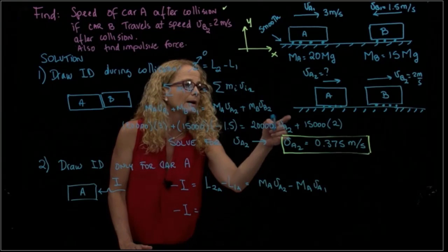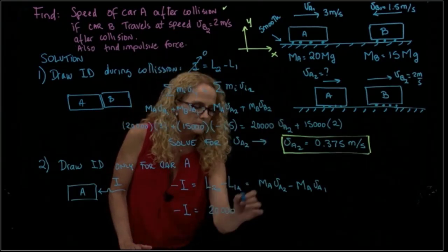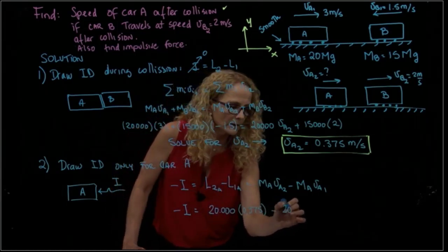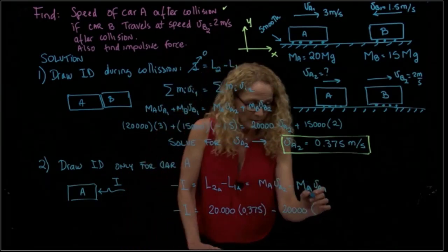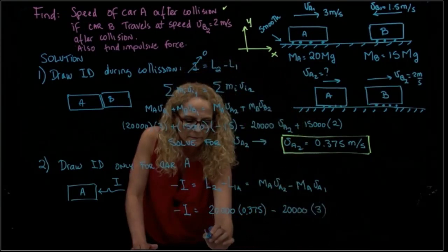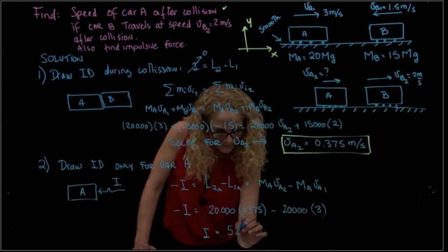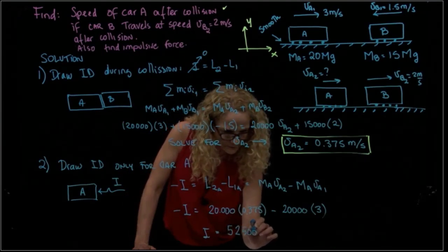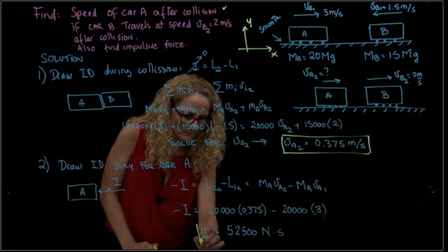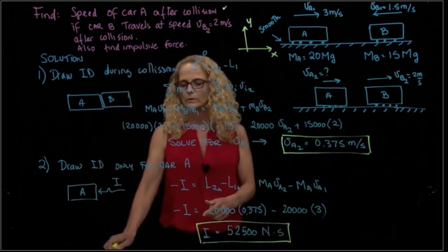which is 20,000 times 0.375 minus 20,000 times 3. So the impact equals negative 52,500 newton-seconds. And that's how we calculate the impact between the two cars.